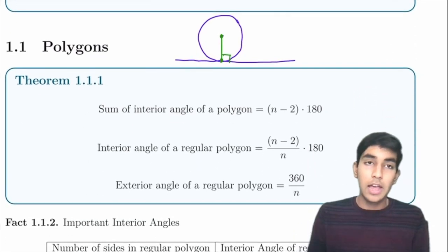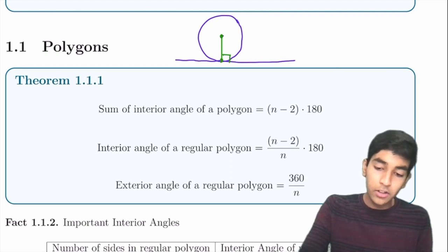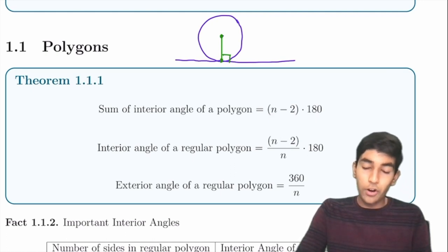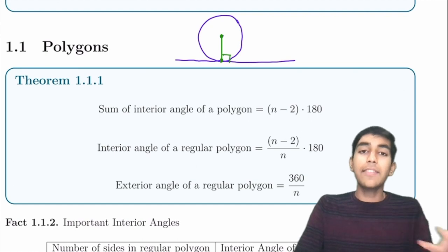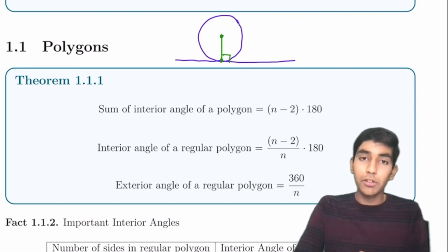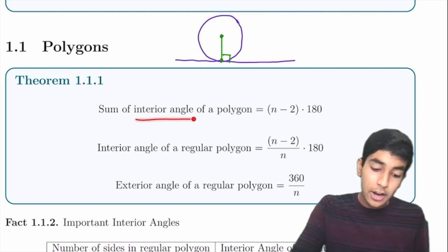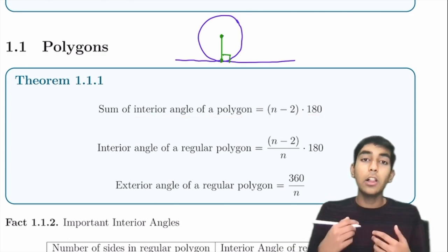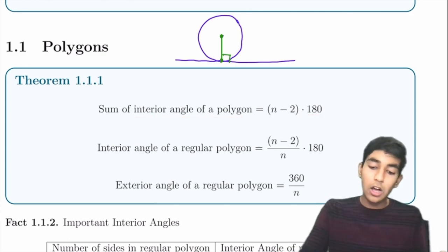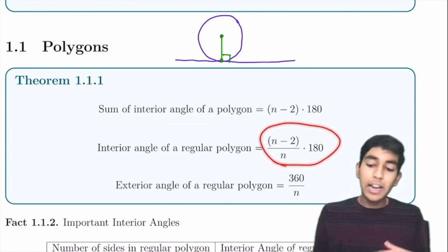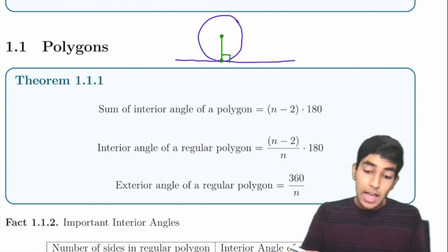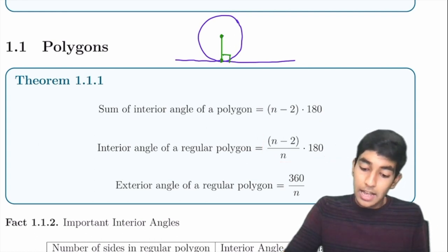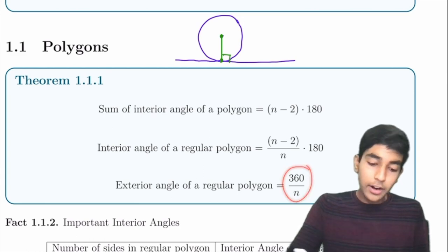Now polygons. The sum of the interior angles of a polygon with n sides — for example, in a pentagon n equals 5 — is (n − 2) × 180. The interior angle of a regular polygon is (n − 2)/n × 180. The exterior angle of a regular polygon is 360/n. So for a hexagon, the exterior angle is 360/6 = 60.